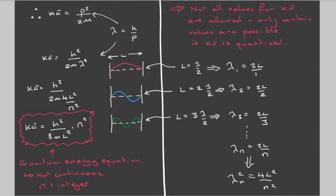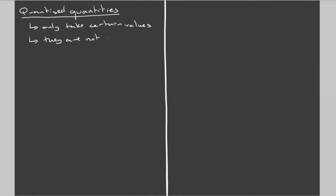We end up with the conclusion that not all values for kinetic energy are allowed — only certain values are possible. That is, kinetic energy is quantized. Quantized means it comes in lumps; any arbitrary value is not allowed.